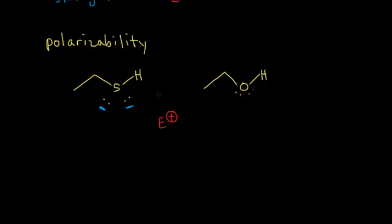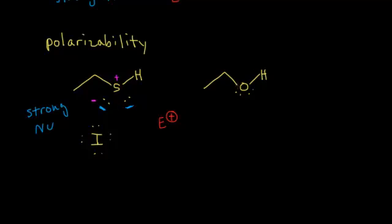You get more polarization when your electrons are further away from the nucleus, allowing them to attack your electrophile. The same concept applies to halogens. The iodide anion is a very large anion, so those electrons are further away from the nucleus, making iodide very polarizable and therefore a strong nucleophile. So this thiol is a strong nucleophile, and so is the iodide anion. Ethanol, by comparison, is relatively weak.